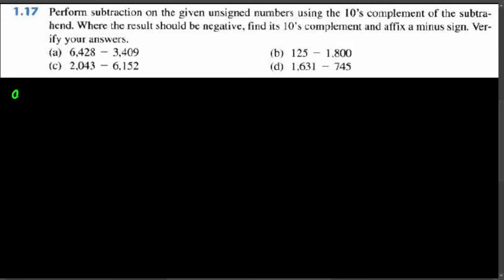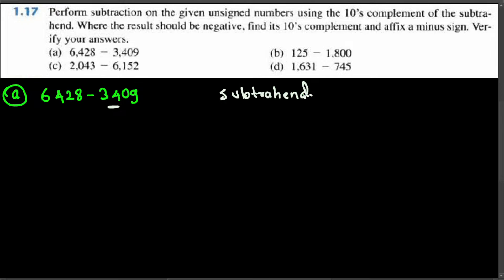Now let's look at part A. We have a subtraction of 6428 minus 3409. The question says to perform the subtraction using the tens complement of the subtrahend. The subtrahend is whatever comes after the minus sign, so here 3409 is the subtrahend. I'm going to take 3409 and find its tens complement.